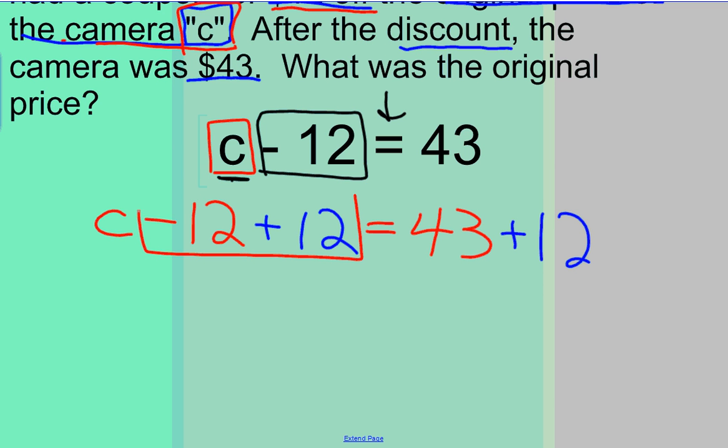Now, any time we have a number and its opposite like we do here, we know that this is equal to 0 because they make like a big zero pair. And my C will come down. Bring down the equal sign. And when I solve the other side, 43 plus 12 equals 55.